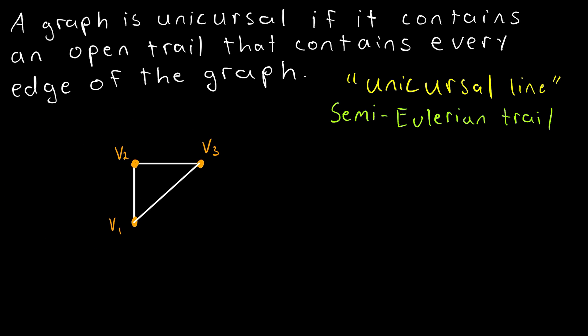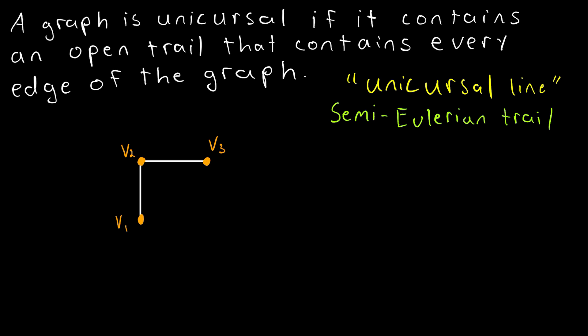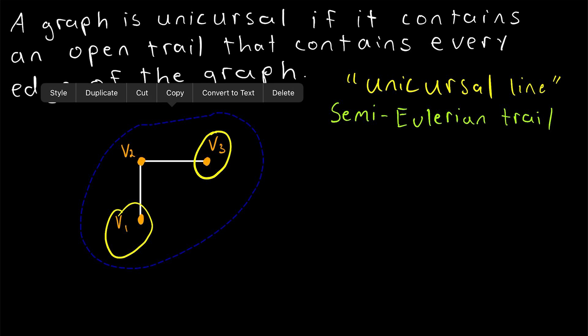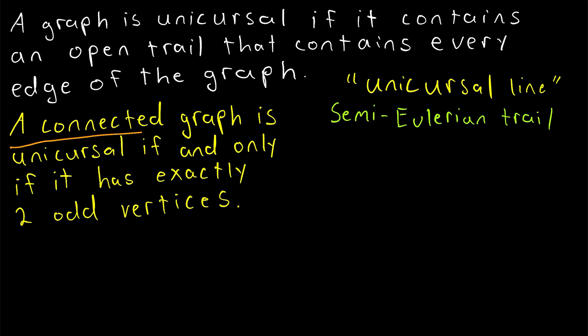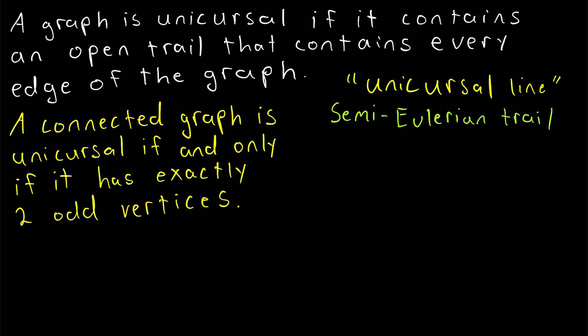Looking back at our Eulerian graph, if we delete that edge V1-V3 again, this is now the unicursal graph we were looking at originally. Notice that not all of its vertices have even degree — in fact, exactly two of its vertices have an odd degree. And as it turns out, that is the key. A connected graph is unicursal, meaning it contains a unicursal line, if and only if it has exactly two odd vertices. In such a graph, a unicursal line must start at one odd vertex and end at the other odd vertex.